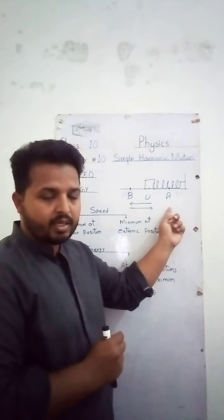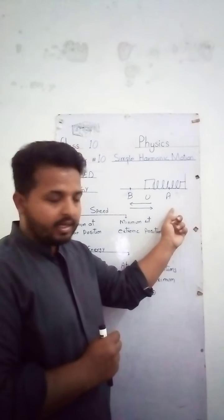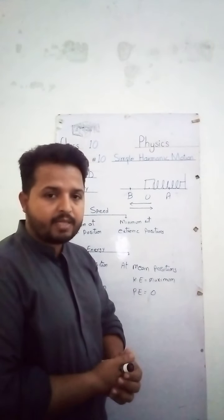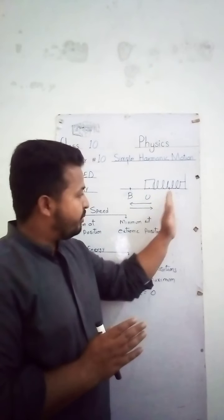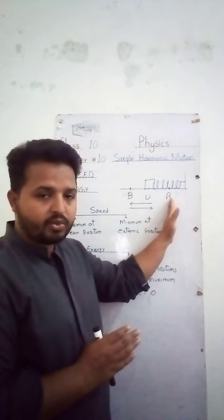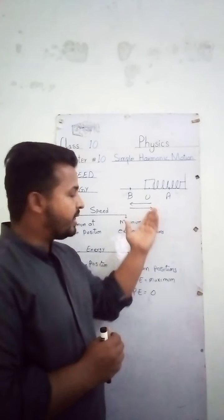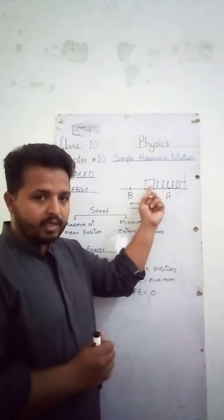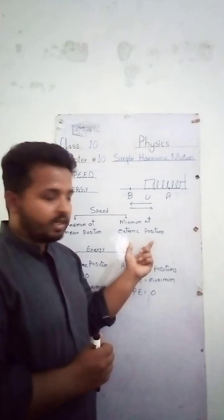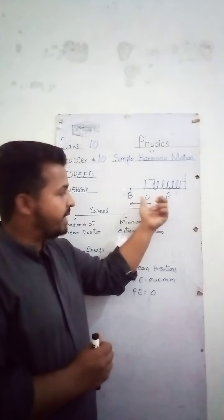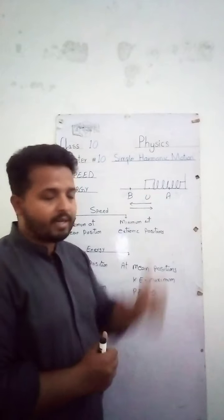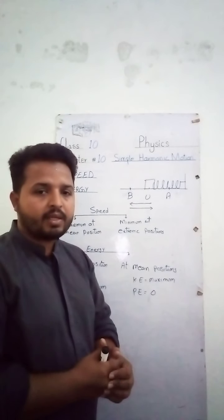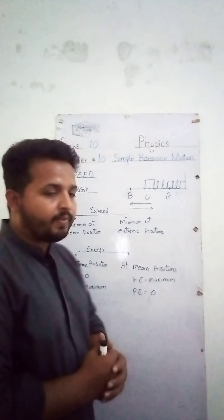While moving towards the other extreme position, the restoring force increases and speed decreases, becoming minimum again at the extreme position. The restoring force becomes maximum, the body momentarily comes to rest, and then restoring force brings the body back towards the mean position where speed becomes maximum and restoring force becomes minimum. In summary: the speed of the object in simple harmonic motion is minimum at extreme positions and maximum at the mean position, because the restoring force always acts towards the mean position.